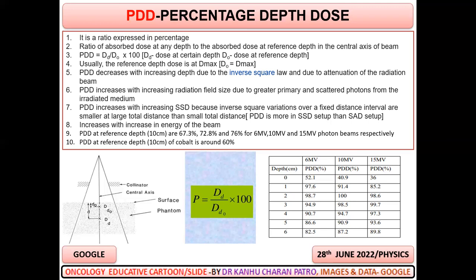PDD decreases with increasing depth due to the inverse square law and due to the attenuation of the radiation beam. PDD increases with increasing radiation field size due to greater primary and scattered photons from the irradiated medium. PDD increases with increasing SSD, and increases with increasing energy of the beam.